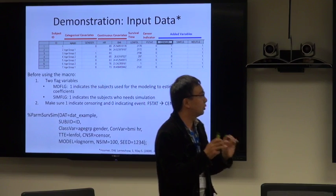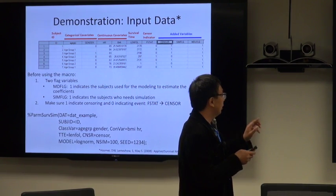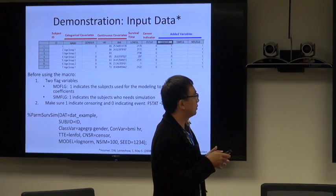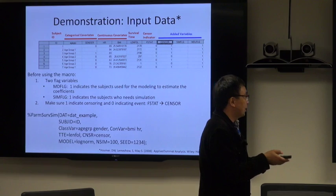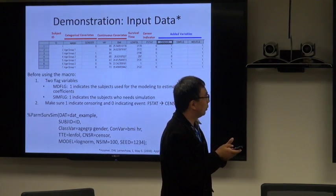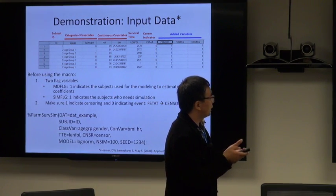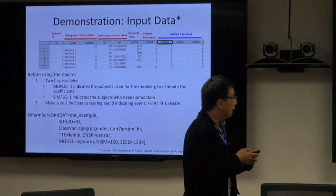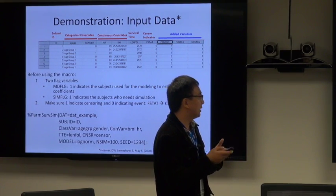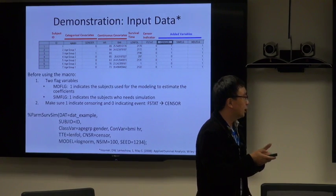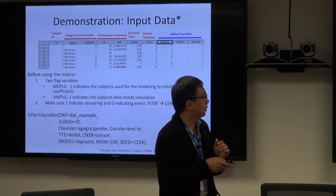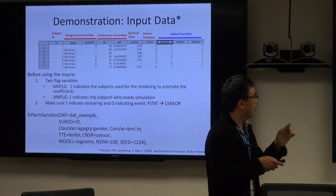Another advantage of our macro is that we don't need too much modification to the input dataset. At most, you only need to create three simple variables. Two of them are basically flag variables. This MDFLG tells the SAS macro which subjects are used for modeling. The SIMFLG tells the macro which subjects need simulation. In addition, we have to make sure one indicates censoring and zero indicates an event. If the original data is not in this format, we have to create a third variable to correct it.